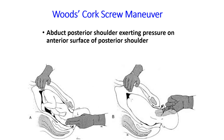In Wood's cockscrew maneuver, a hand is inserted into the vagina and fingers are pressed over the anterior aspect of the posterior shoulder — over the chest region. Pressure applied anteriorly produces abduction of the posterior shoulder. This abduction reduces the biacromial diameter and helps with expulsion of the baby.